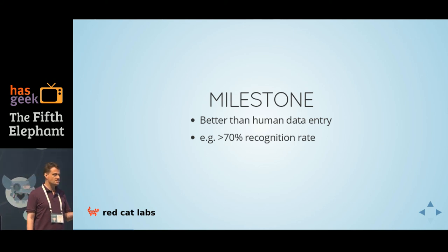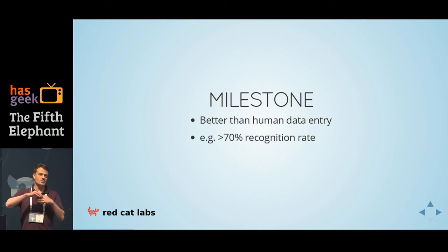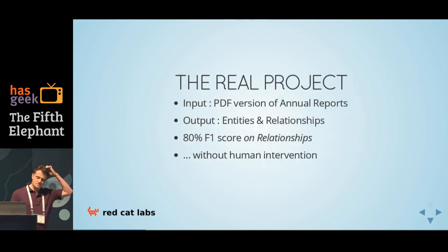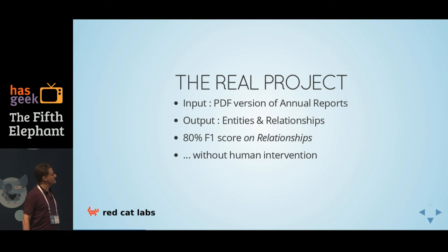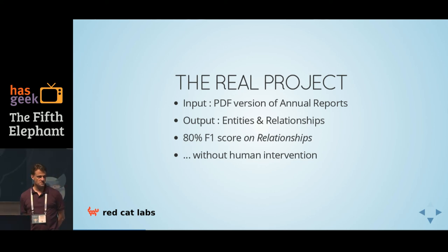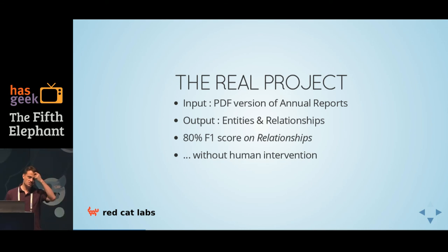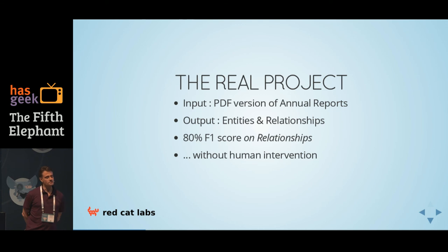The criteria, really, is we want this to be better than humans — kind of a benchmark for what their outsource companies are doing — like a 70% recognition rate, repeatability rate. But when it comes down to it, the actual real projects are slightly different. Having started, we discover they actually want this done from the PDFs that the companies produce, so we're not getting clean text. The output they want is entities and relationships, but the entire score is going to be slightly higher — 80 versus 70. They only care about relationships because that's all they actually store; the entities are just a byproduct of the relationships between them.